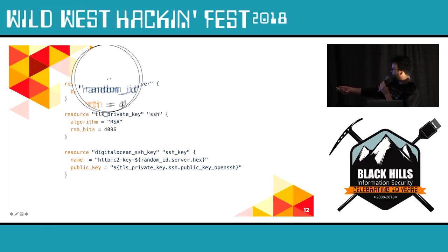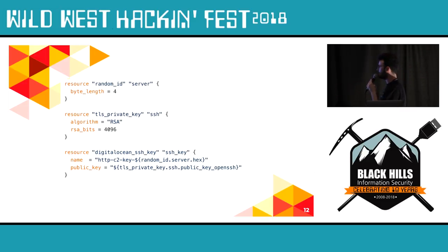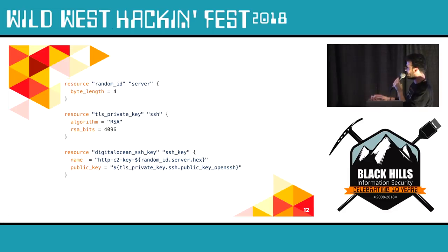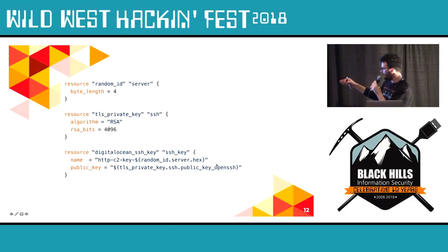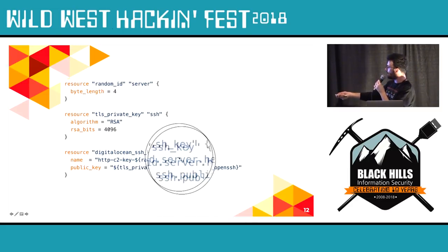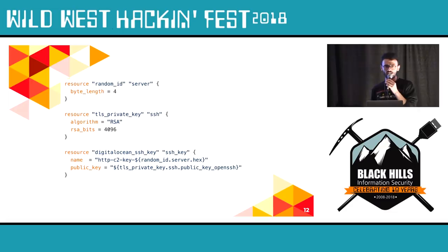To dynamically create SSH keys, the first thing we do is define the random_id resource with a byte_length of 4, which creates 4 bytes of randomness used in the droplet's name. We then use the tls_private_key resource, which generates an SSH key using the RSA algorithm with 4096 bits. By giving the public_key variable the previously defined tls_private_key resource, we're creating an implicit dependency — Terraform knows it needs to first create the SSH public-private key pair before creating the droplets.